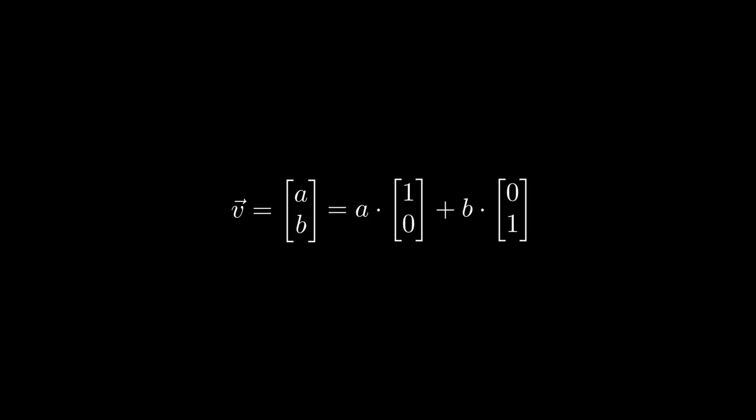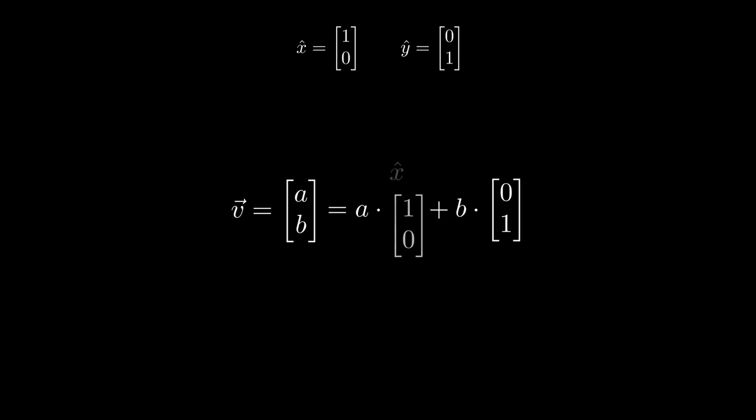There is one more thing worth exploring before moving on. Consider the vector v with coordinates a and b. This vector can be rewritten as a times the vector with coordinates 1 and 0, plus b times the vector with coordinates 0 and 1. If we call the vector with coordinates 1 and 0 'x-hat', and the second vector with coordinates 0 and 1 'y-hat', then v can be written as the sum a times x-hat plus b times y-hat, where a is the x-coordinate of v and b is the y-coordinate. This means that every two-dimensional column vector can be written as the sum of multiples of these two special vectors x-hat and y-hat, and we'll keep this decomposition in mind for later.